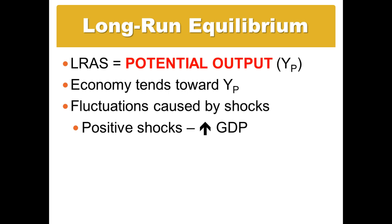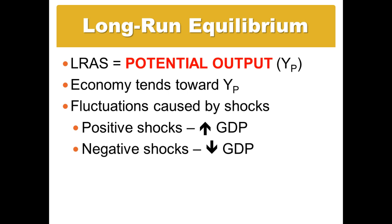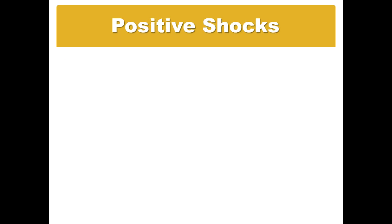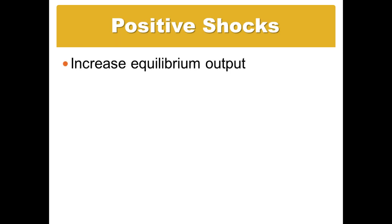When we talk about positive shocks — either aggregate demand shocks or aggregate supply shocks — we're talking about an increase in GDP. If there's a negative shock, then we talk about there being a decrease in GDP. Positive shocks are situations in which the output we're creating in the short run is actually greater than the potential output.